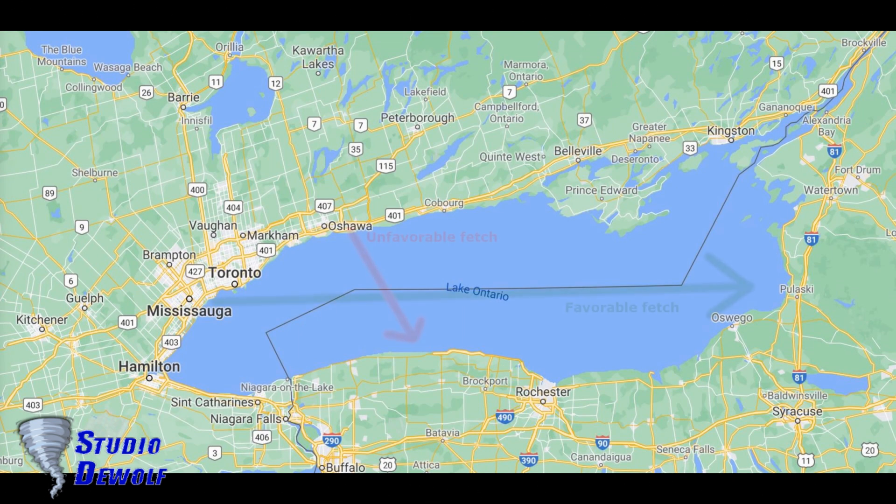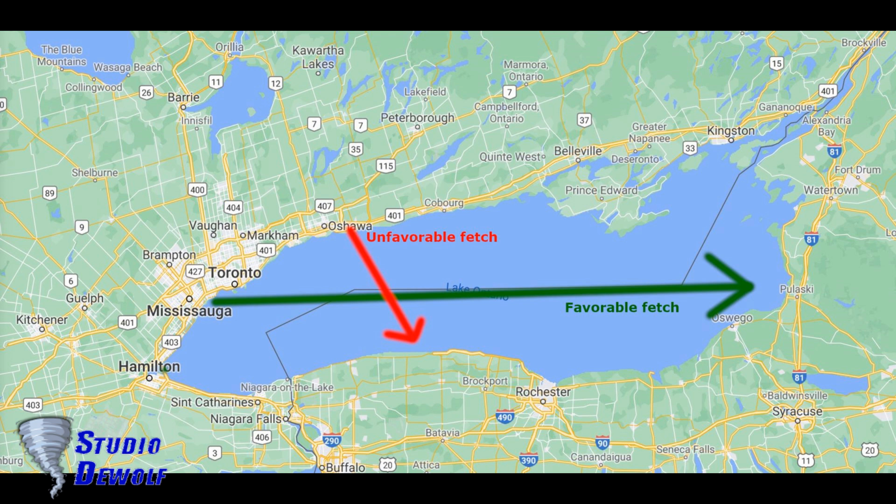The distance that an air mass travels over a body of water is called fetch. Because most lakes are irregular in shape, different angular degrees of travel yield different distances. Typically, a fetch of at least 100 kilometers or 62 miles is required to produce lake effect precipitation. Generally, the larger the fetch, the more precipitation produced.